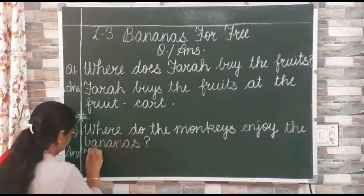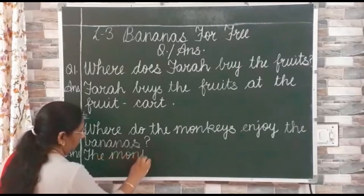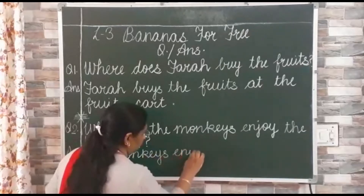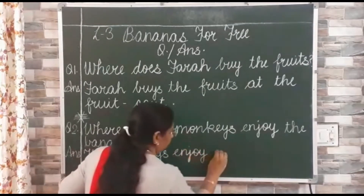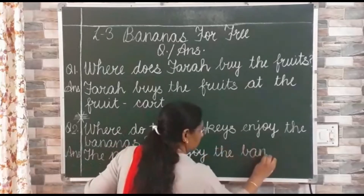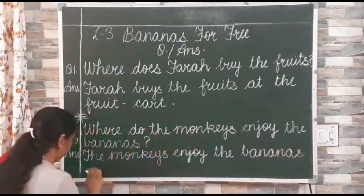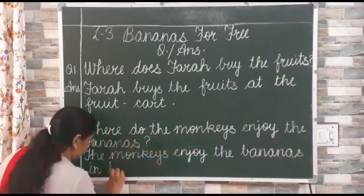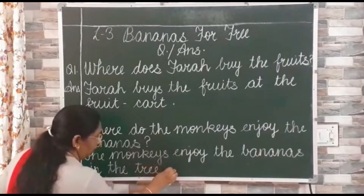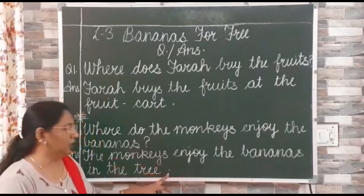The monkeys — M-O-N-K-E-Y-S — enjoy — E-N-J-O-Y — the bananas in the tree — T-R-E-E. And put a full stop. Why? Because the sentence is over, so we have to put the full stop.